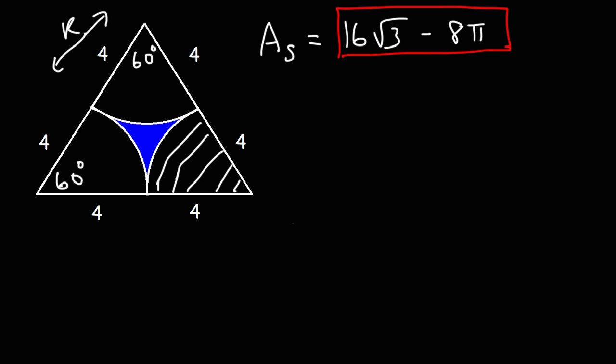So let me type this in. This is equal to 2.58 square units. So that is the area of the shaded region. That's it for this video. Now you know how to solve this particular problem. Thanks for watching.